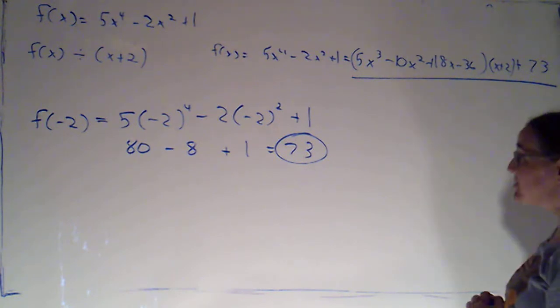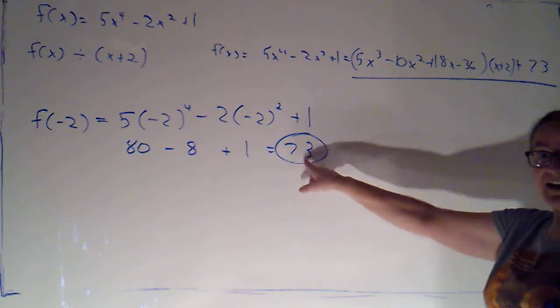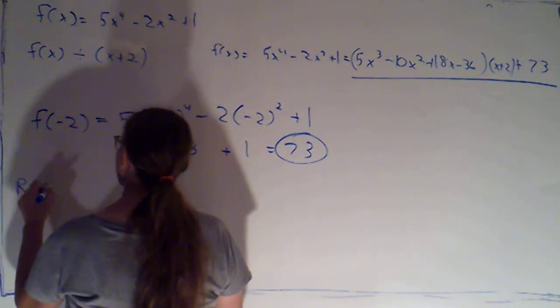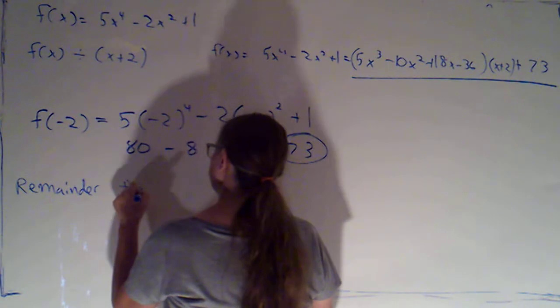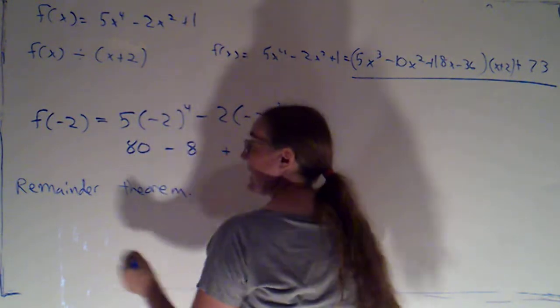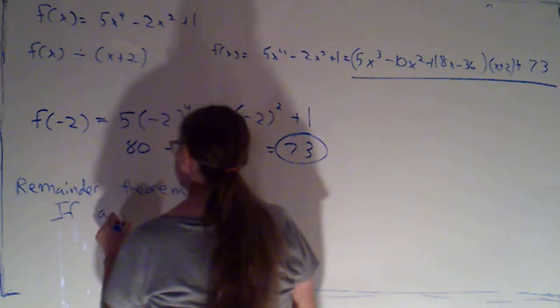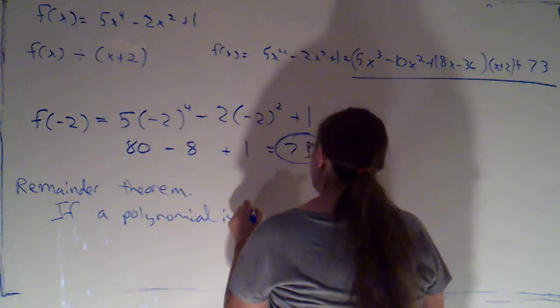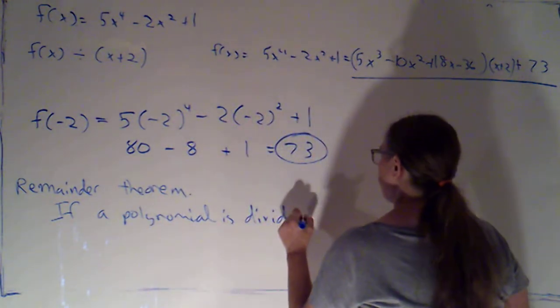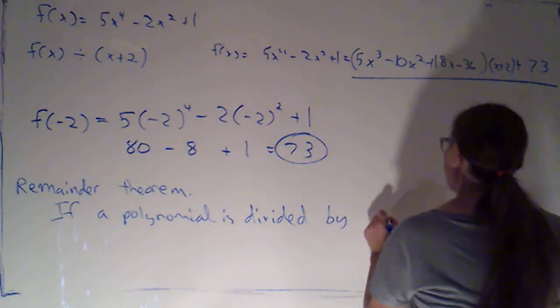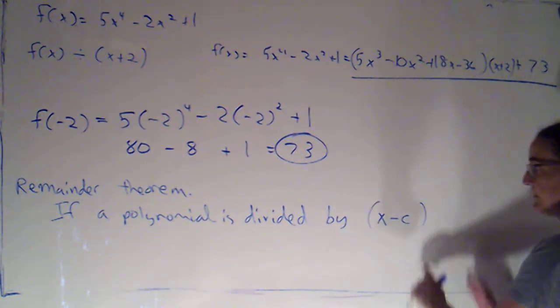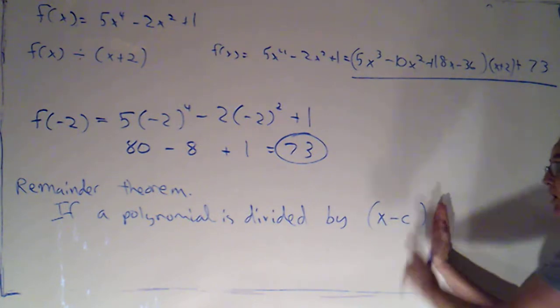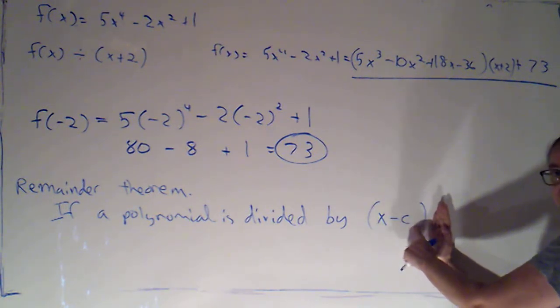So it's not coincidence that I got that. And in fact, that's a theorem. That's called our remainder theorem. That says if a polynomial is divided by x minus c, so that's the sort of thing that we could use synthetic division for. One copy of x minus a number.